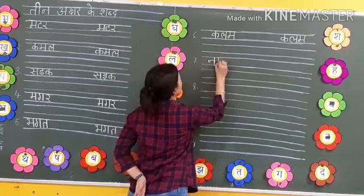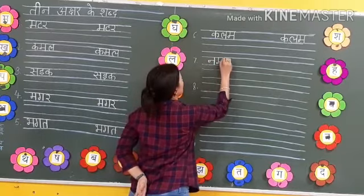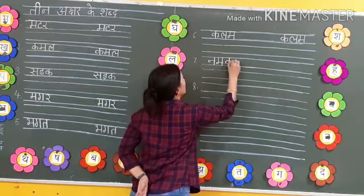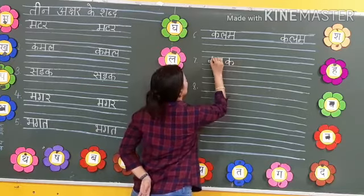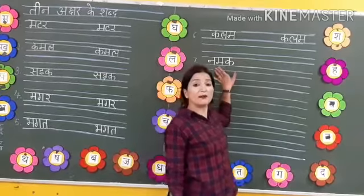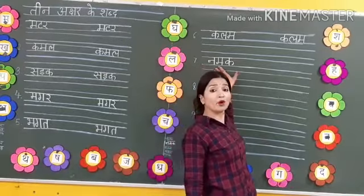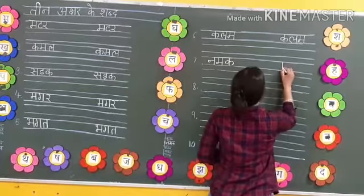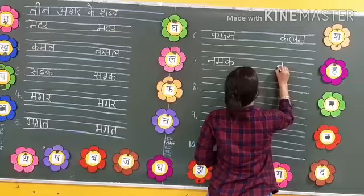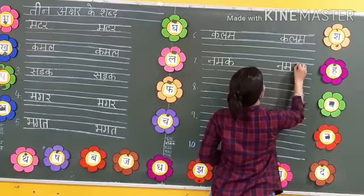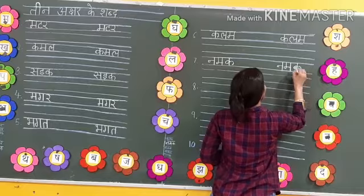Then on seventh number, write. Na-ma. Ka-na-ma. Students, again I am repeating, make proper headline. Na-ma. Ka-na-ma.